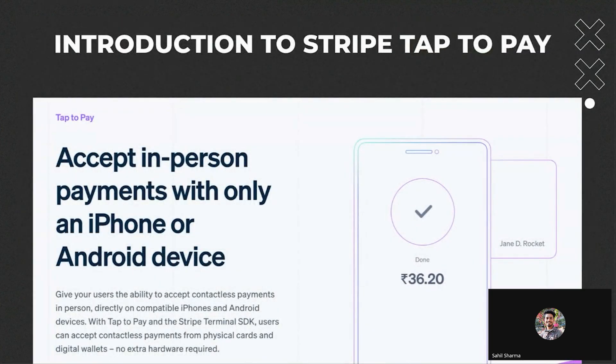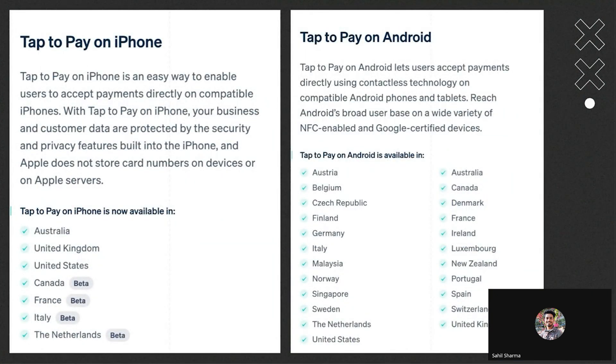The Stripe Tap2Pay feature allows contactless in-person payments directly on our smartphone devices without the need for extra hardware. We are not talking about making payments to our mobile phones, but instead accepting payments through a card with the help of NFC. This feature is currently available in limited countries — on iPhone it's available in full mode in a few countries and in beta mode in others, and on Android it has some availability as well.